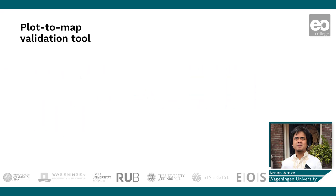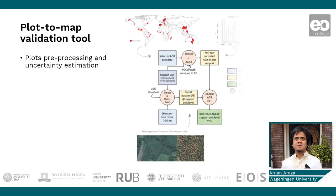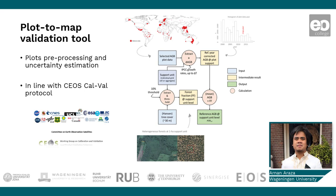That is the main motivation of the PLAT2MAP tool. Currently, the main functions of PLAT2MAP include plot data preprocessing and selection, plot-level uncertainty estimation, and even plot harmonization to address temporal and spatial mismatches between plots and maps. The main guideline of PLAT2MAP is the CS book, a comprehensive validation protocol.